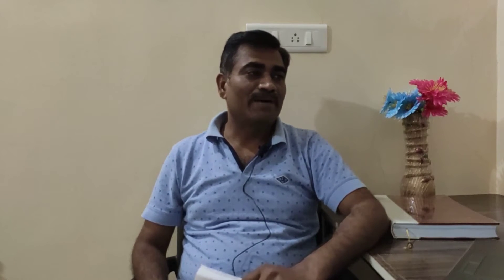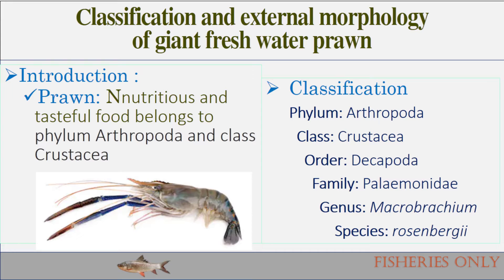Now let us discuss the classification. The phylum is Arthropoda, meaning the phylum having jointed legs. The class is Crustacea — the body is covered with a carapace or hard shell. The order is Decapoda — deca means ten and poda means legs, so ten-legged animals come under this order. The family is Palaemonidae, which includes mostly freshwater prawns. The genus is Macrobrachium and the species is rosenbergii. The common name is giant freshwater prawn, also called pochakolam or scampi in Marathi.